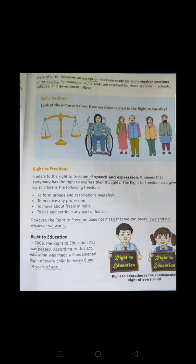Under right to freedom, you can also practice any profession. If you want to be a doctor or an engineer, that is your choice — you are completely free to choose your profession and no one can prohibit you. You also have the freedom to move about freely in India. If we are living in Punjab and want to move to Haryana, we are completely free to move and even settle there. No one has the authority to stop or prohibit us — we can settle at any part of India.